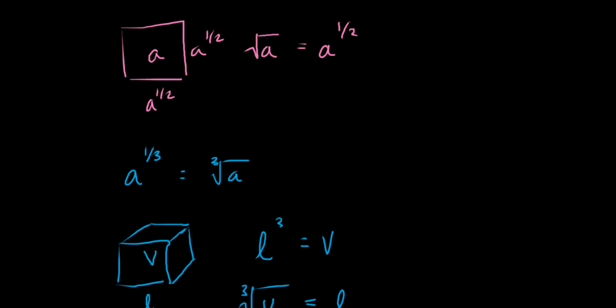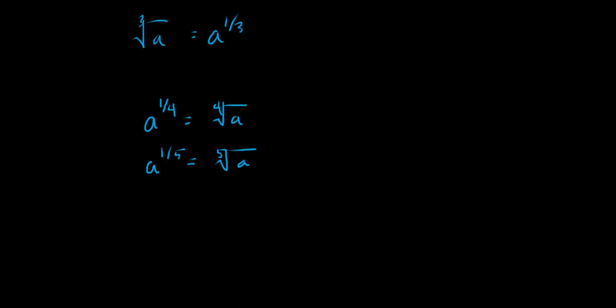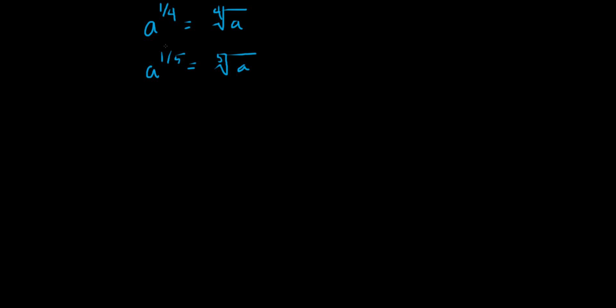That's all I'm going to cover in this video in terms of rational exponents. Notice that so far I've only shown you what happens when you have a one in the numerator of the exponent. But what if it wasn't a one? For example, if you had a to the two-thirds — what does that two mean? We're going to see that in the next video.